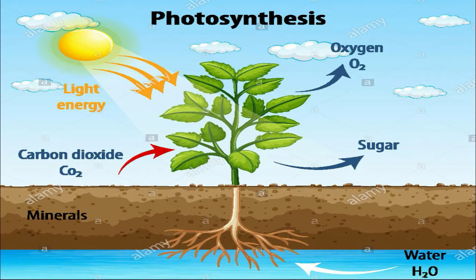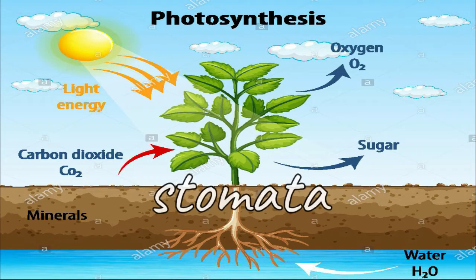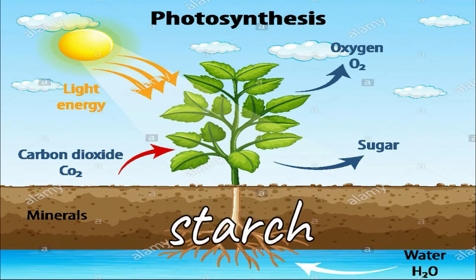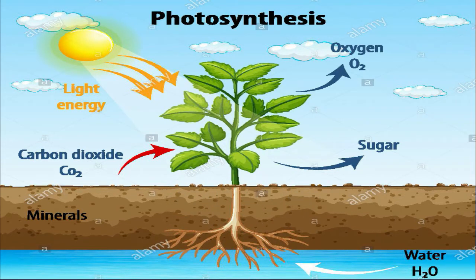In photosynthesis, energy from the sun is used to combine water and carbon dioxide to make food. Water is absorbed by the roots and brought by the stem up to the leaves. Carbon dioxide enters the leaves through tiny openings called stomata. The food formed during photosynthesis is composed of starch. Without food, plants cannot live.